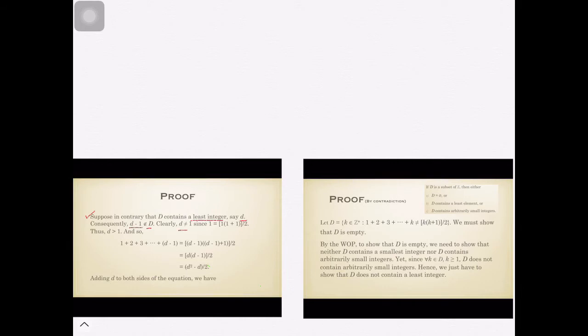Moreover, it is also clear that d should not be equal to one, knowing that one can satisfy this expression right here. Note that set D will have all the elements that will not be equal to this expression right here. Since one is equal to that expression, one shouldn't be an element in set D, which implies that our d, being in set D, should not be equal to one — and that gives us that d should only be greater than one.